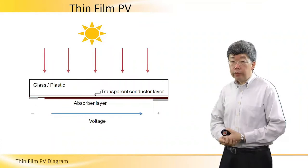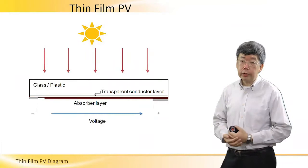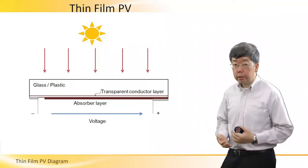On this glass substrate, there is a transparent conductor layer. Light can pass through this layer and it can also conduct electrical current.